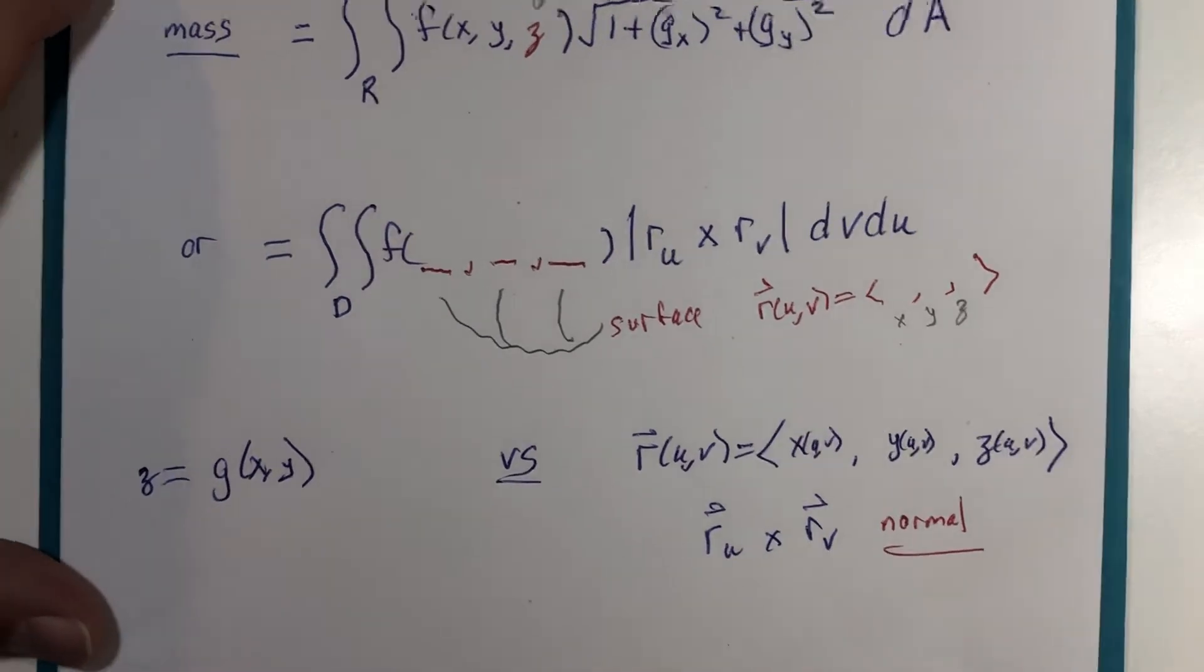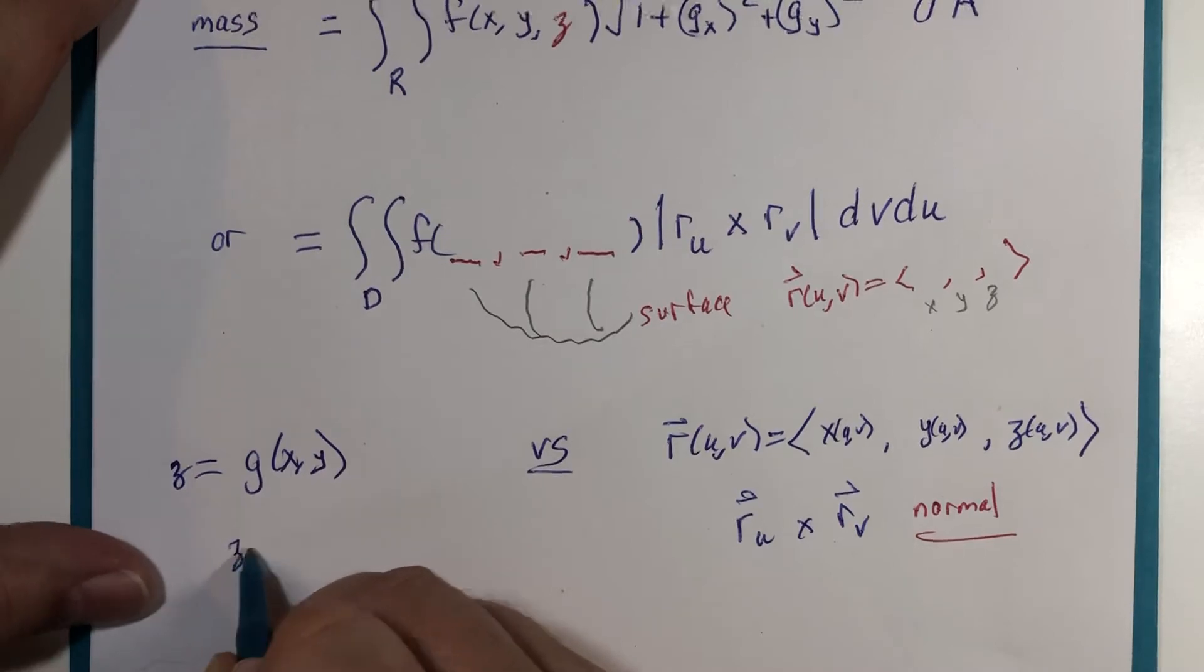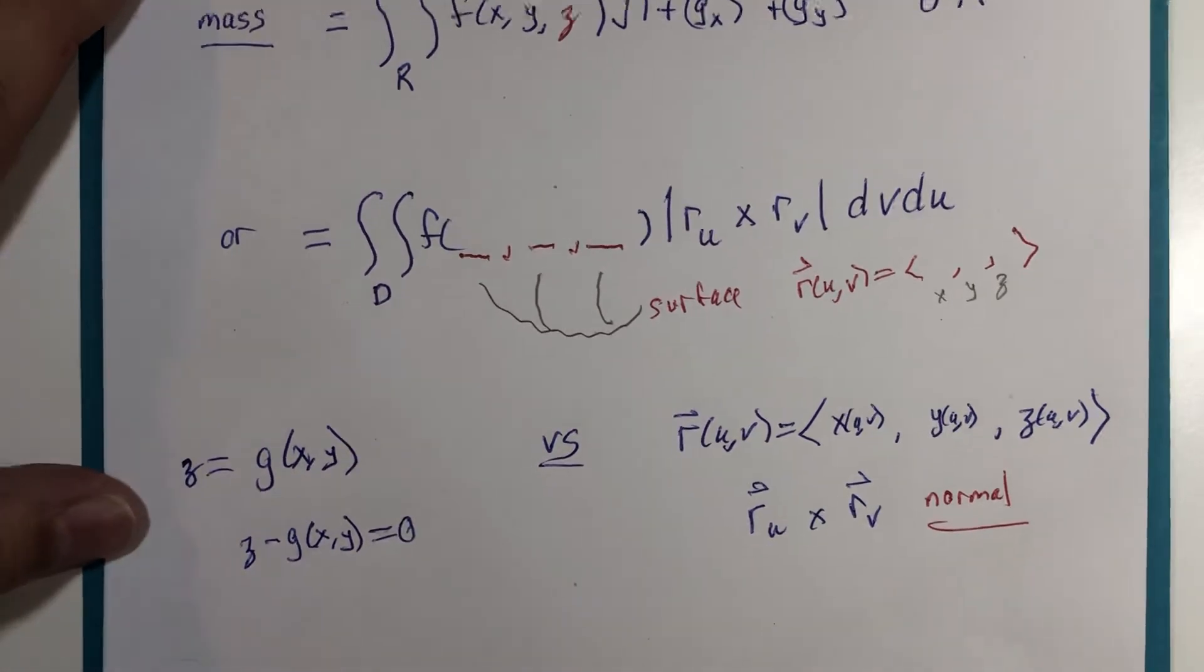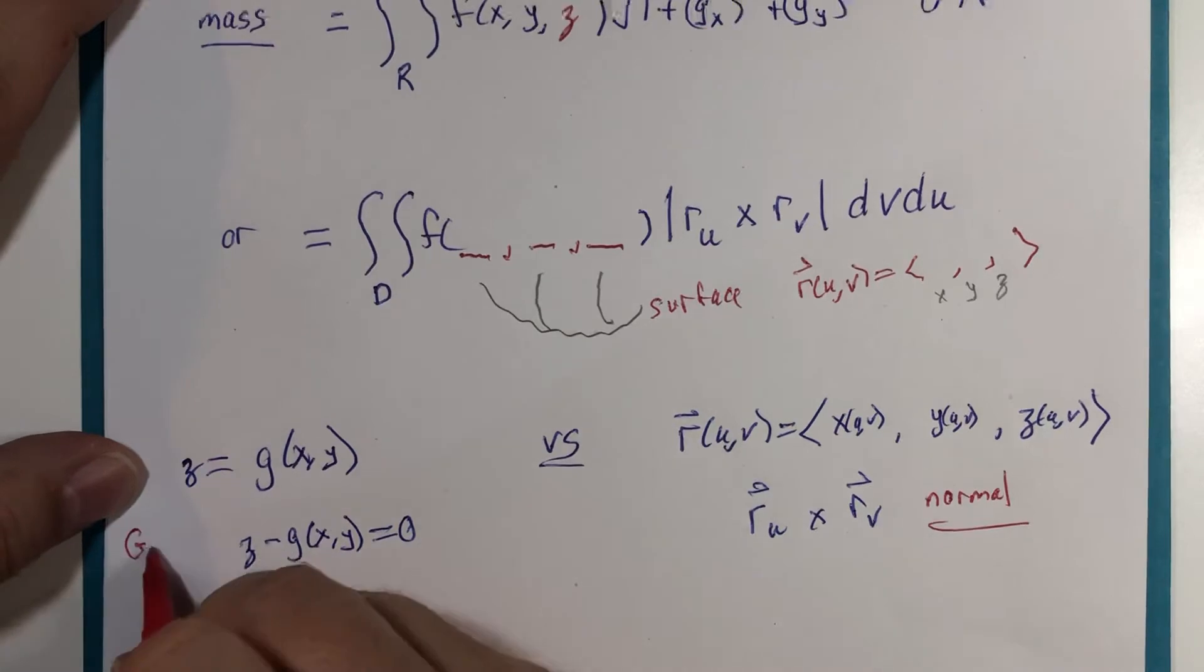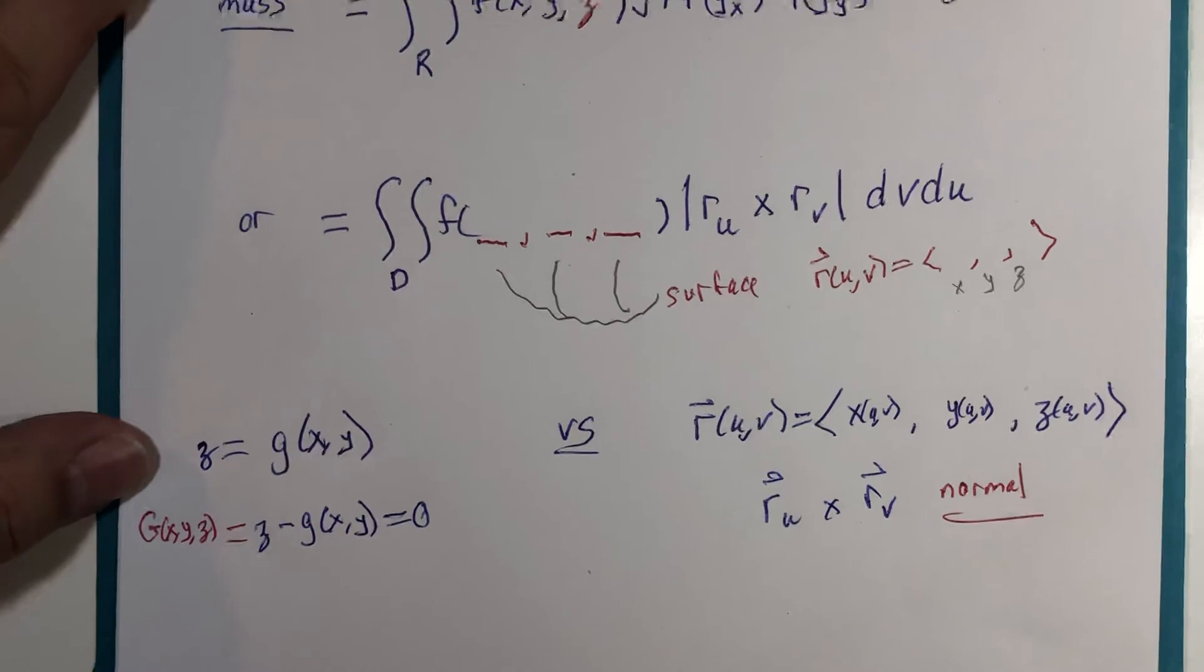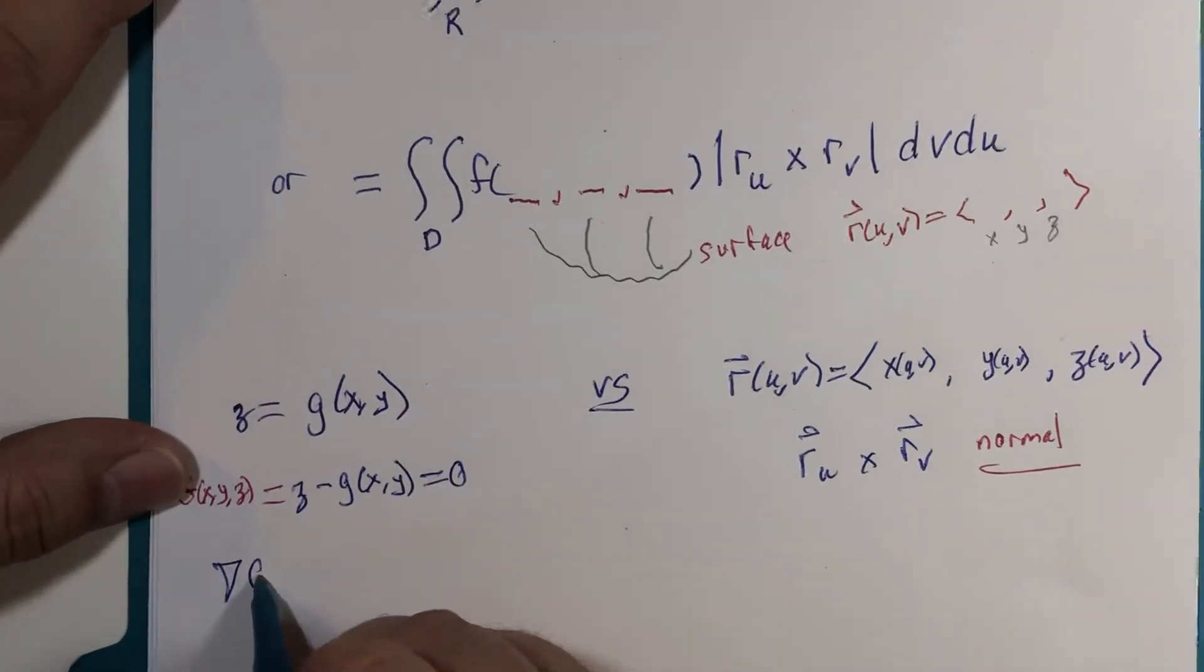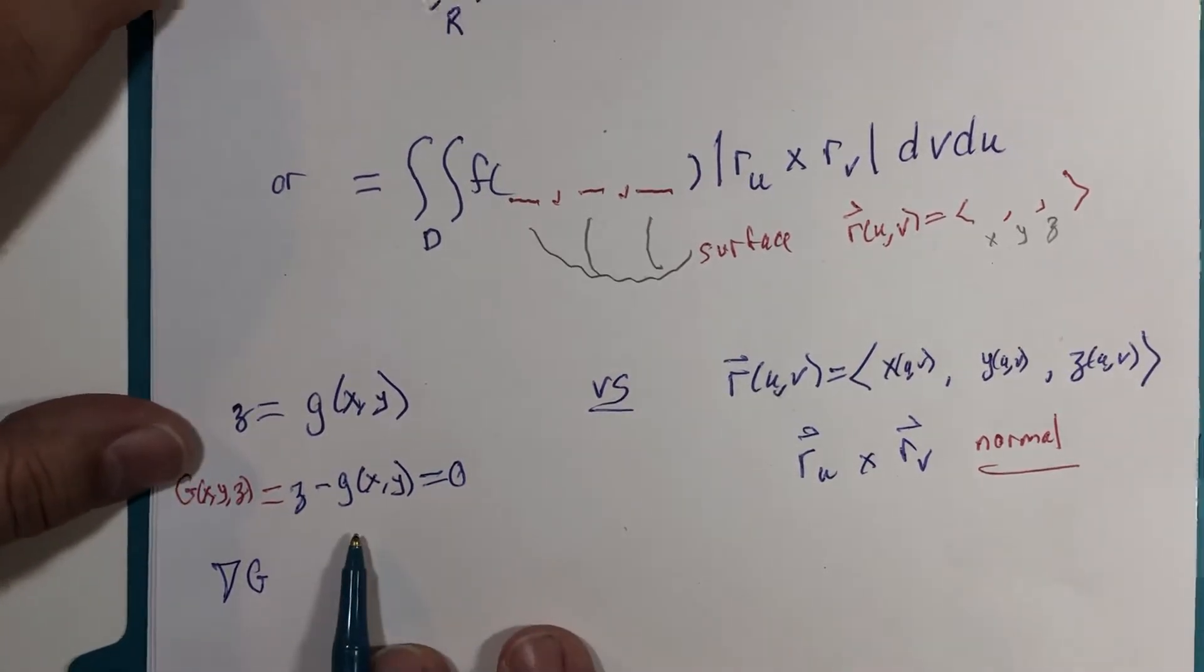In a previous unit, we could manipulate this and let's say subtract g of x, y to the other side of this equation. And we could call it capital G, now of three variables. And if I were to take the gradient of that capital G function, I would get a normal vector to this three-dimensional surface.